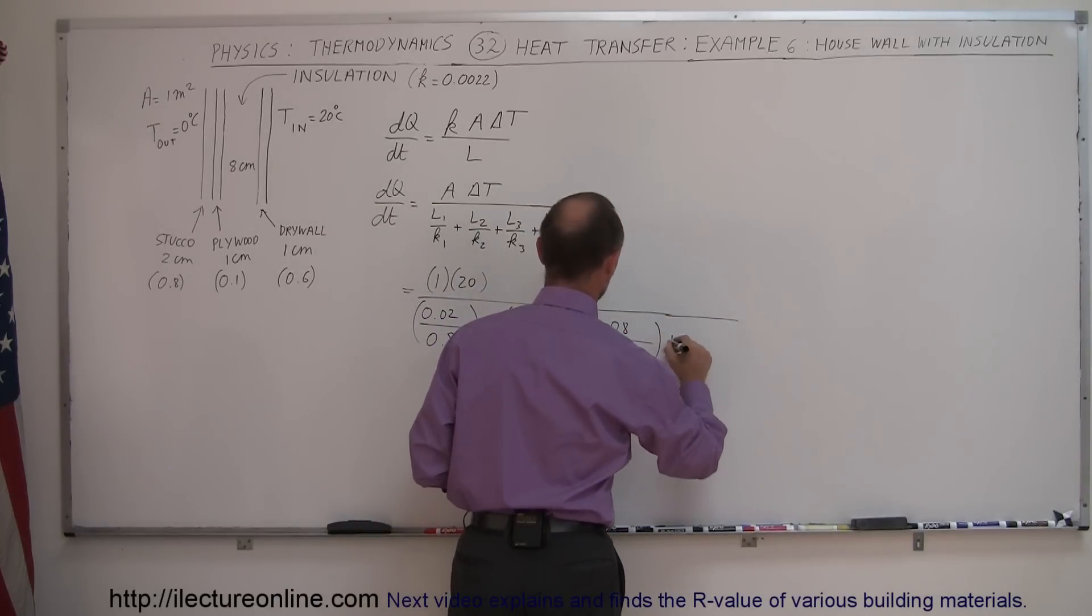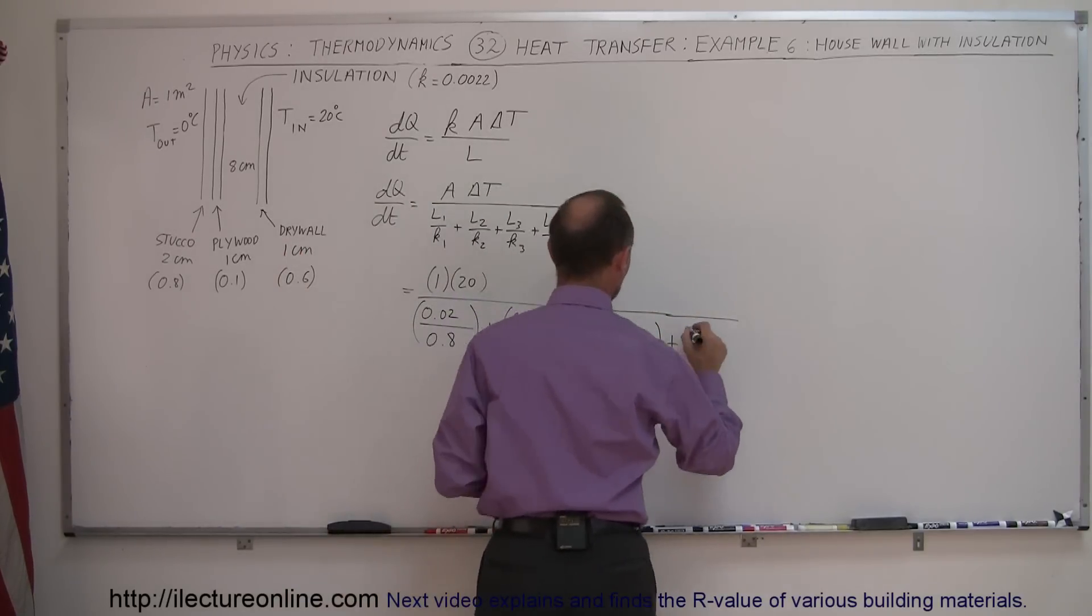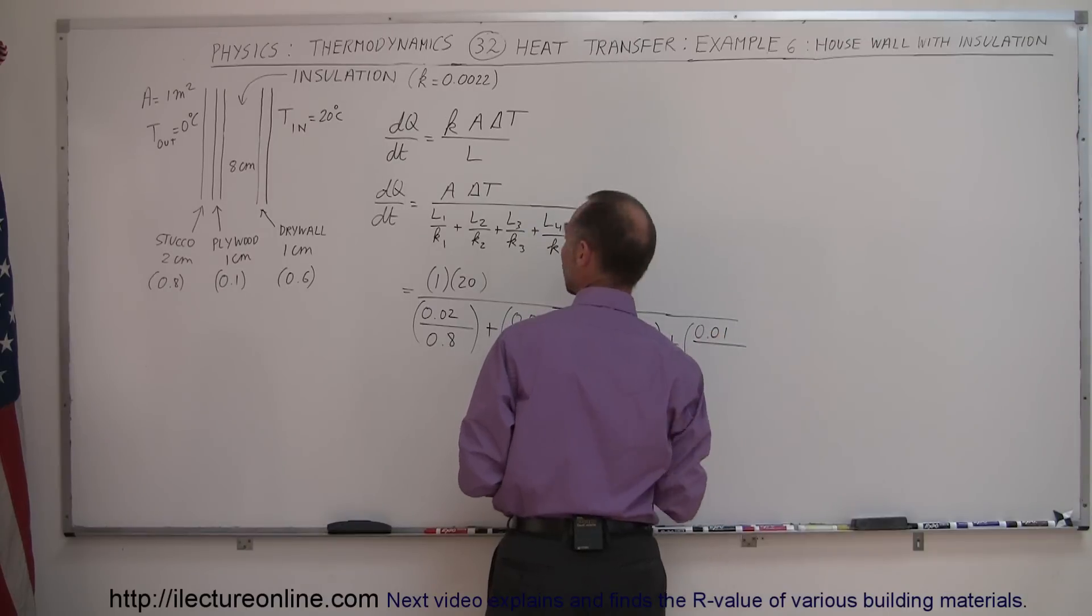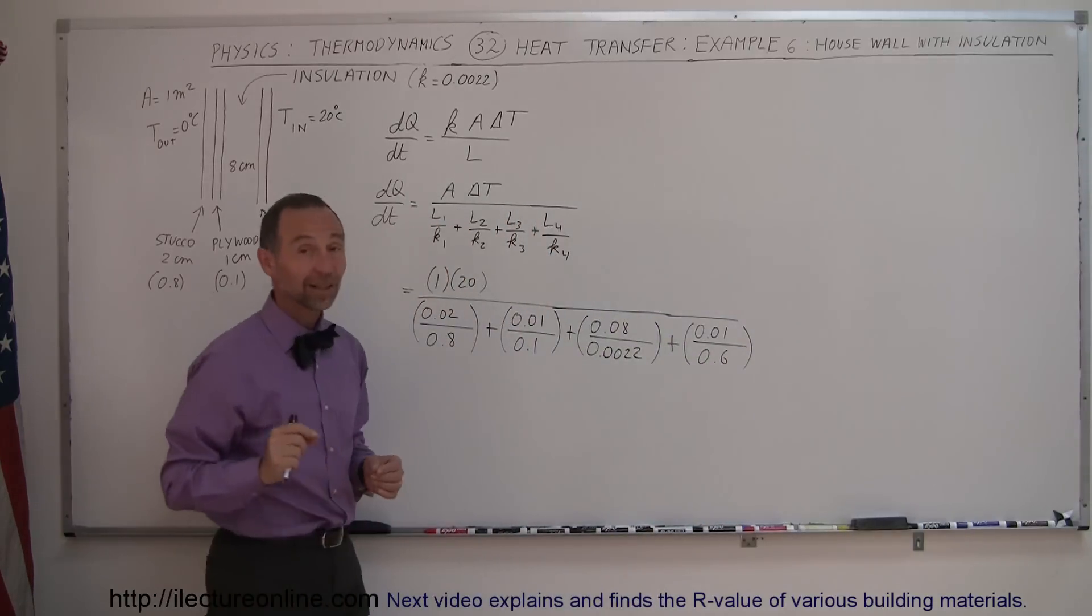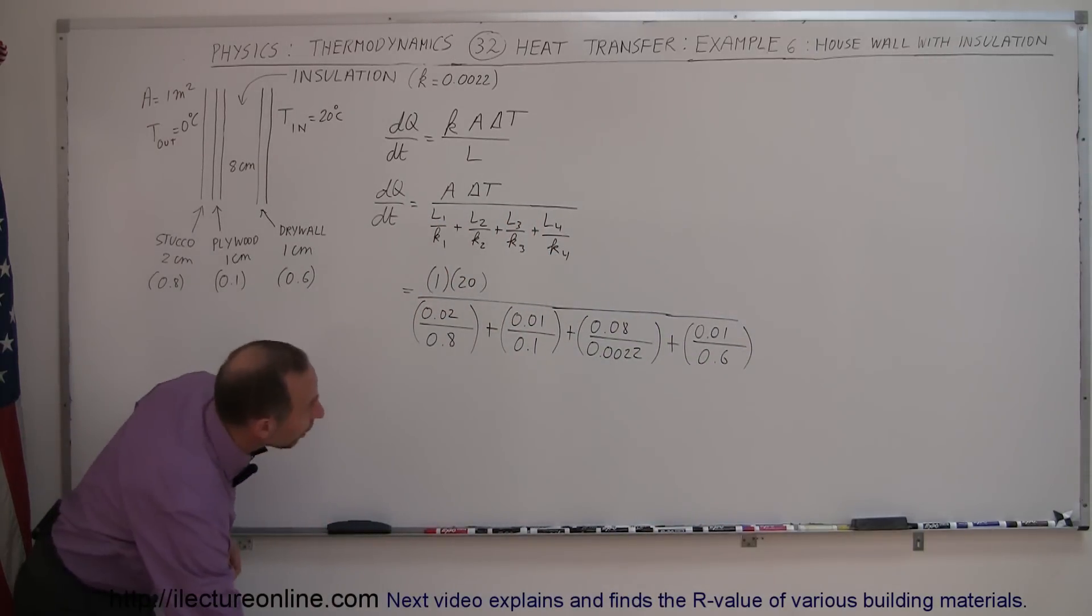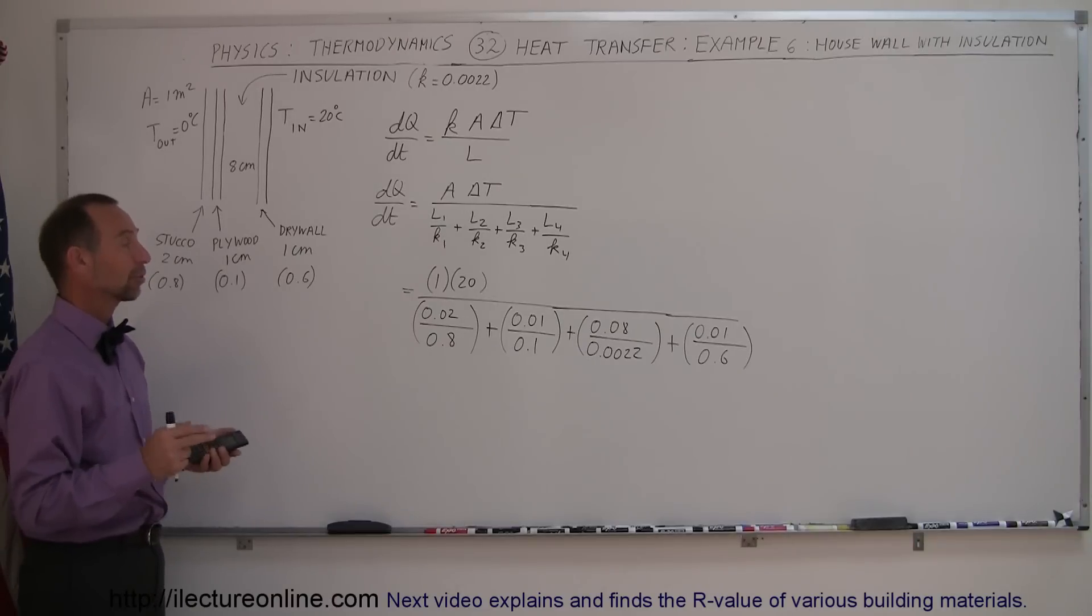And then finally, the drywall was the same as last time. So we had drywall thickness of about 1 centimeter divided by 0.6 for the conductivity constant. So let's find out now what the heat loss will be through one square meter of wall as compared to what it would be without the insulation.